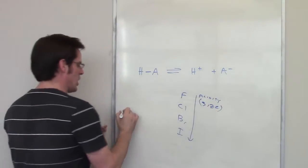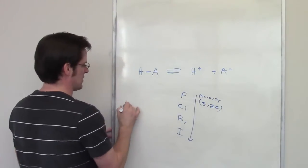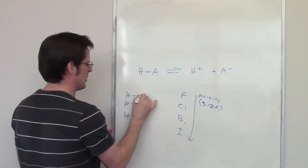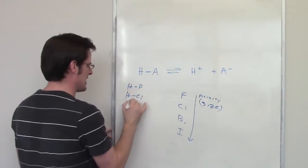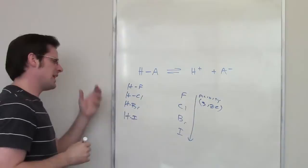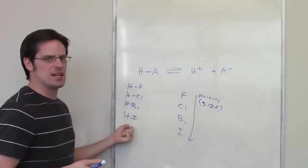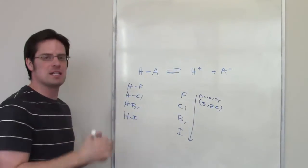So, HI is a stronger acid than HBr, which is a stronger acid than HCl, which is a stronger acid than HF. HF is a weak acid. So, electronegativity is not the reason here. Size must be.